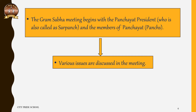A Gram Sabha meeting begins with the Panchayat president, who is also called Sarpanch or head of that village, and the members of Panchayat. Various issues are discussed in the meeting — for example, road facility, water facility, schools, medical facility and many more.